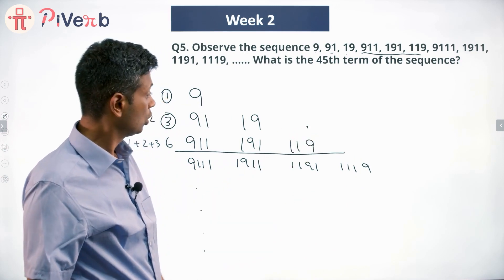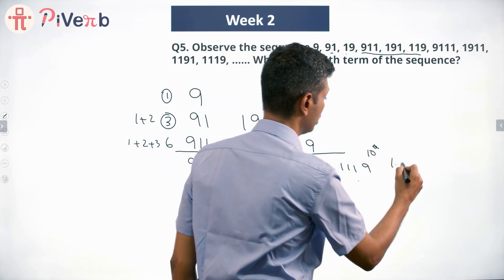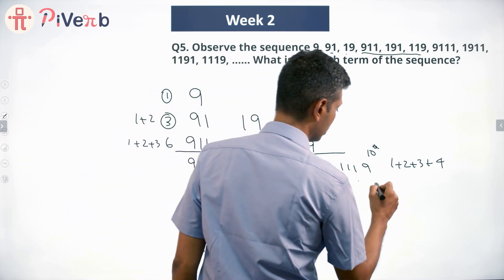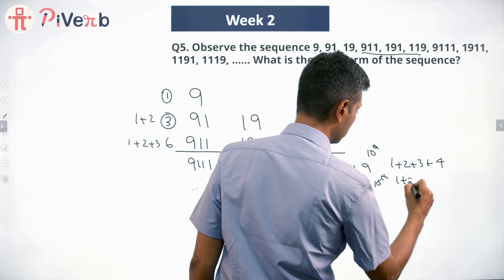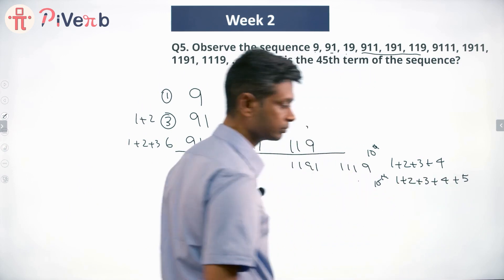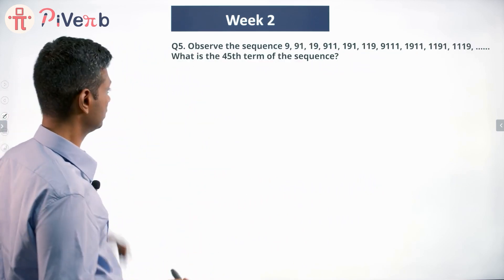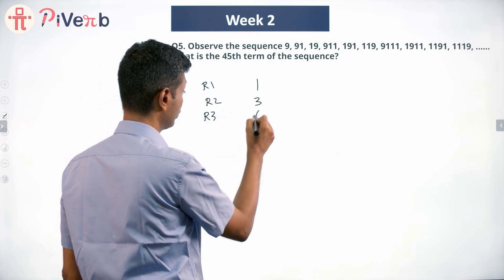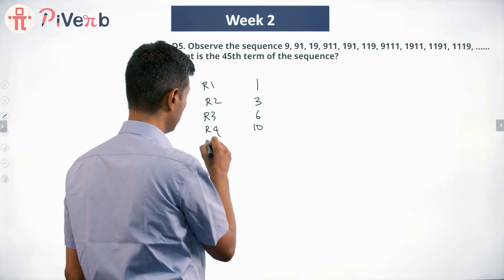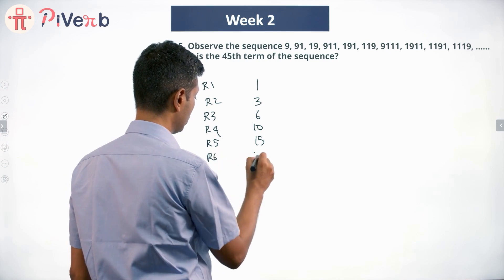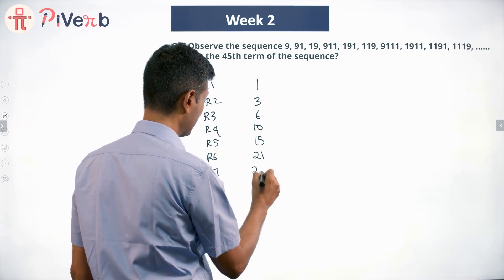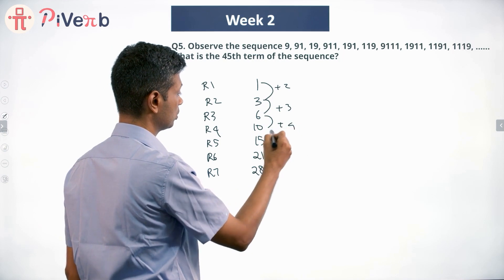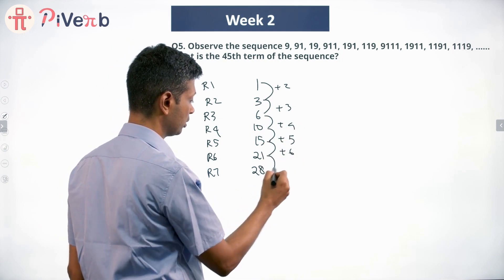The 7th number ends the second row and the 10th number ends the fourth row — that's 1+2+3+4. The 15th number ends the fifth row: 1+2+3+4+5. At the end of row 6 we reach 21, end of row 7 we reach 28. I'm adding 2, then 3, then 4, then 5, then 6, then 7 each time.